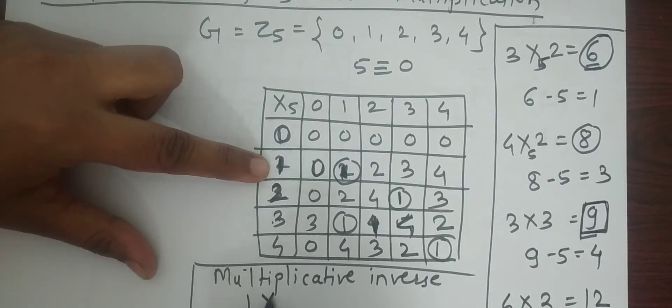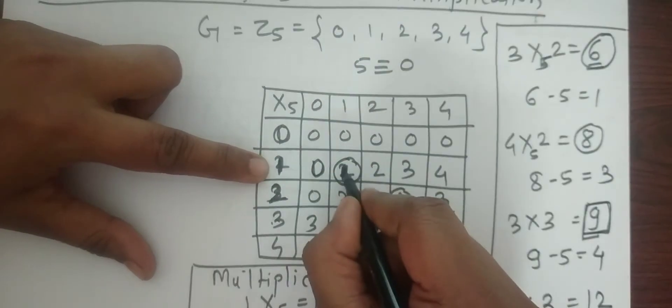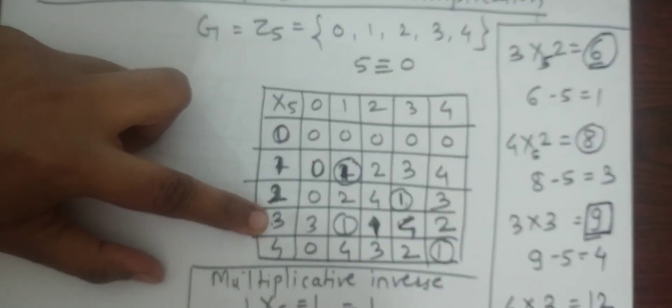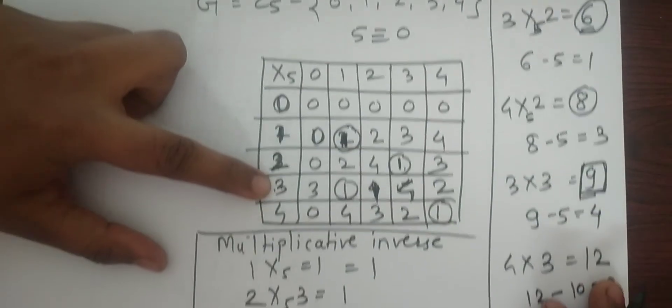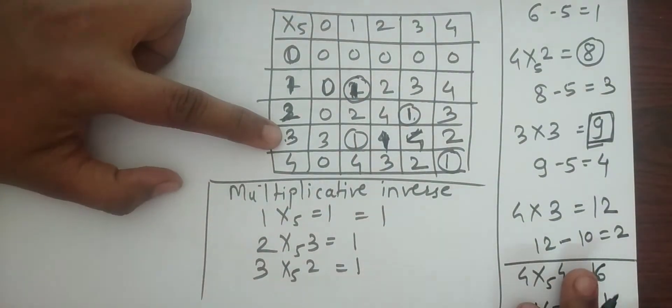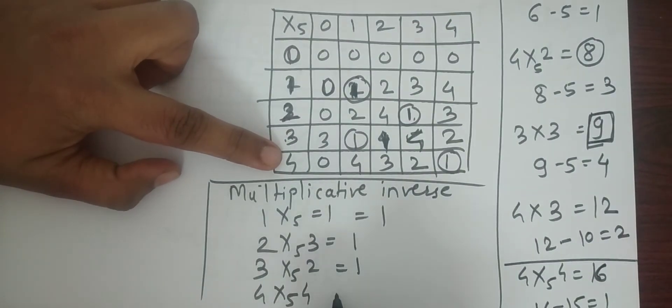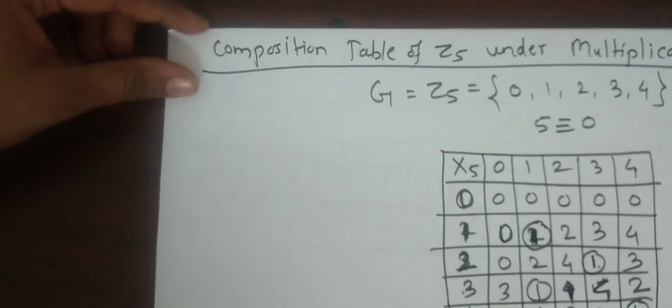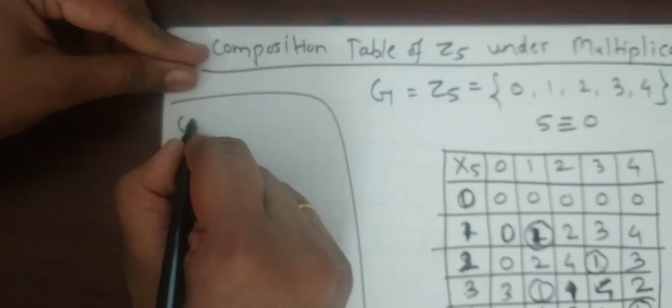From the table: 1×1=1, so inverse of 1 is 1. 2×3=1, so inverse of 2 is 3. 3×2=1, so inverse of 3 is 2. And 4×4=1, so inverse of 4 is 4. From the composition table we can always find the inverse and identity element.